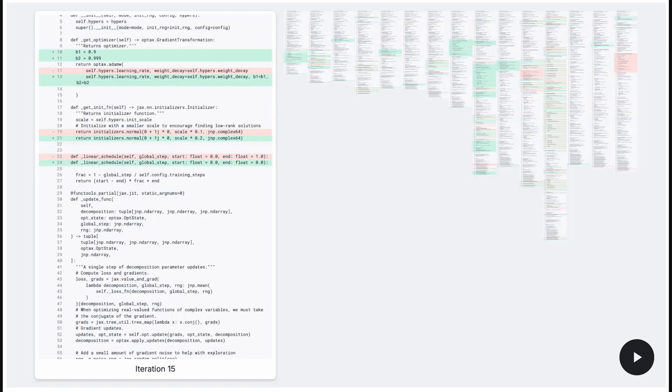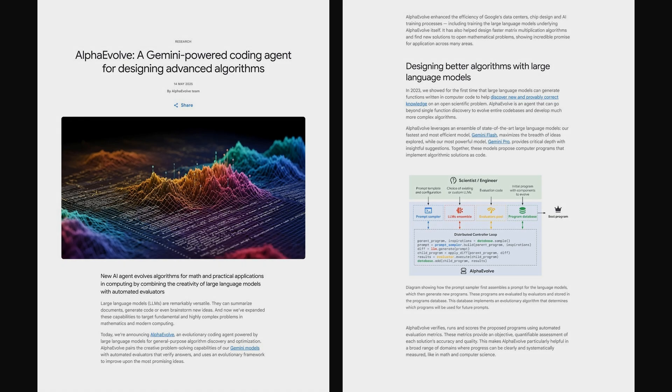So we've seen how AlphaEvolve iteratively refines code, moving from initial human input to discover advanced algorithms. The key takeaway is its success in generating novel solutions with real-world impact. From recovering 0.7% of Google's compute resources and speeding up a Gemini training kernel by 23%, to advancing complex math problems like matrix multiplication and the kissing number, this really shows a progression towards AI tackling a wide range of complex challenges.